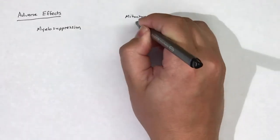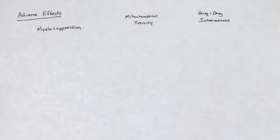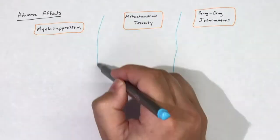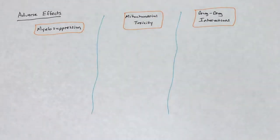The adverse effects of oxazolidinones can be divided into three different categories: myelosuppression, mitochondrial toxicity, and drug-drug interactions.